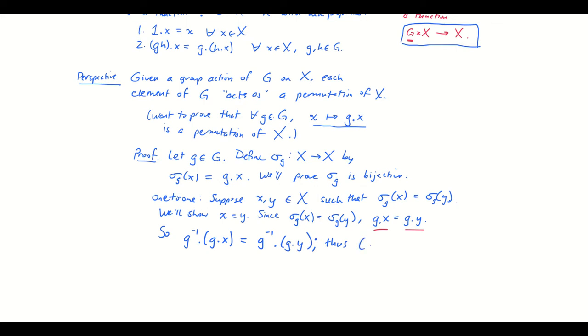Thus, by our composition rules, (g^(-1)·g)·x equals (g^(-1)·g)·y. And that means that the identity acting on x equals the identity acting on y, which means at last that x equals y. So sigma_g really is one-to-one.